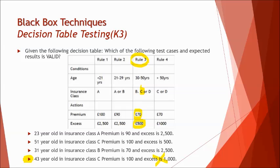Let's look at the option C. 31 years old in insurance class B, so obviously 31 year old in insurance class B, that's again rule three where we have 30 to 50 years of age and class B is here. So we talk about that and the premium is 70, that's correct, but at the end 2500 is not the excess. That's where finally even C is also wrong as per the table.